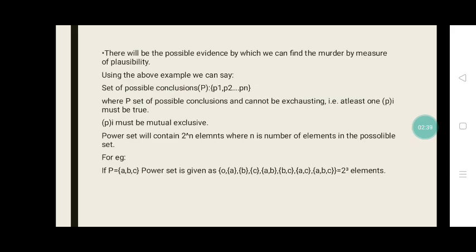There will be the possible evidence by which we can find the murder by measure of plausibility. Using the above example, we can say set of possible conclusions P equals P1, P2, Pn, where P is the set of possible conclusions and cannot be exhausting. At least one P must be true. P must be mutually exclusive. Power set will contain 2 to the power of n elements, where n is number of elements in the possible set.